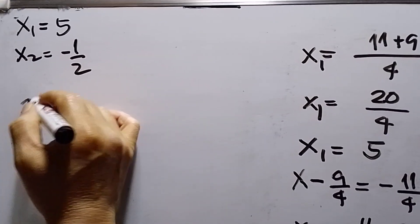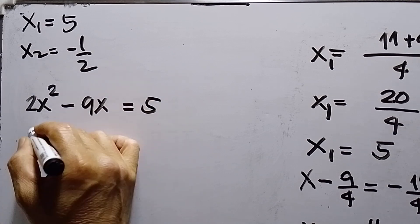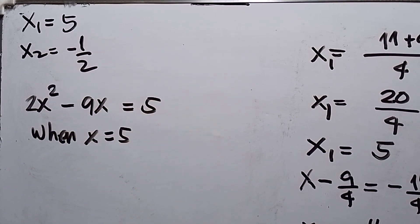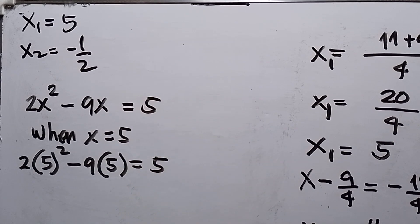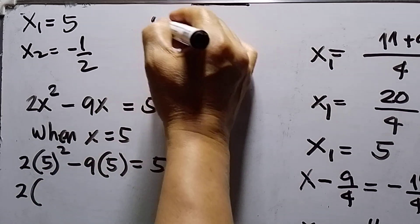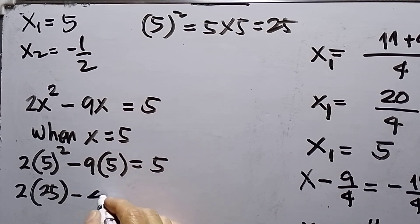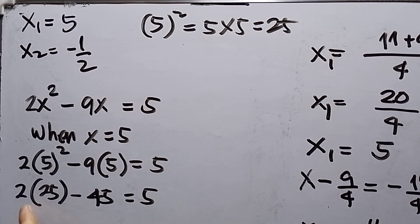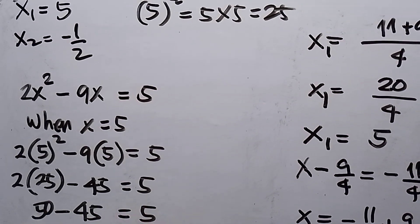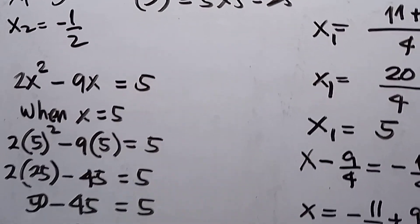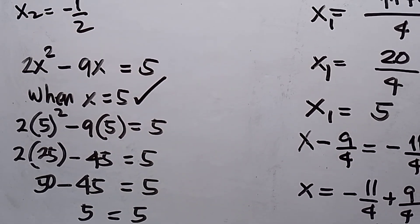We can check this by substituting the roots. The equation is 2x squared minus 9x equals 5. When x equals 5: 2 times 5 squared minus 9 times 5 equals 5. So 2 times 5 squared is 2 times 25, which equals 50. Then 9 times 5 is 45. So 50 minus 45 equals 5, and 5 equals 5. Therefore, x equals 5 is correct — that is my first root.